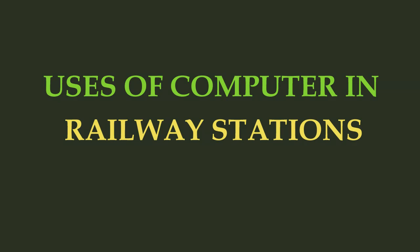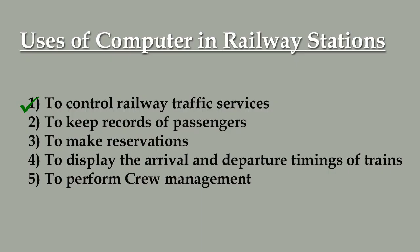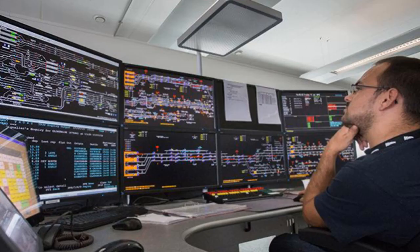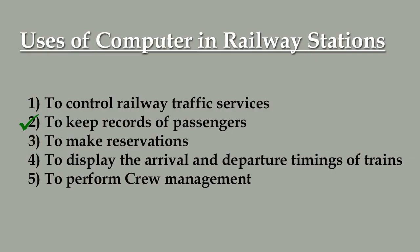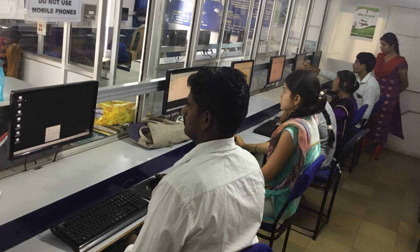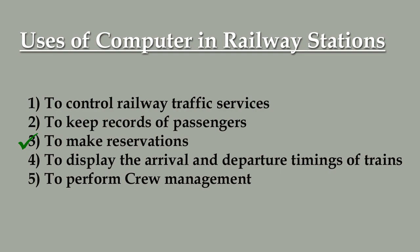The uses of computers in railway stations: Number one, to control railway traffic services — the officers of railway traffic control services use special computers to control railway traffic services. Number two, to keep records of passengers — computers are used by the railway employees to keep records of all the passengers who travel in trains.